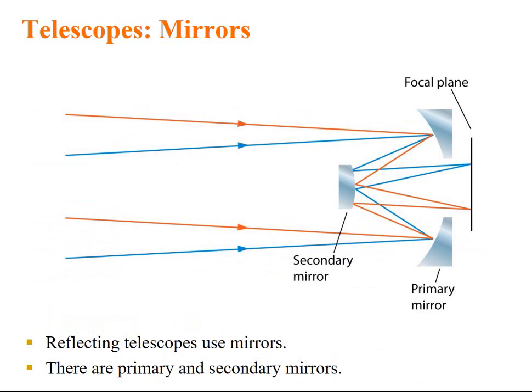We have another type of telescope also which uses mirrors. Reflecting telescopes use mirrors. There are primary and secondary mirrors employed to image a distant object.